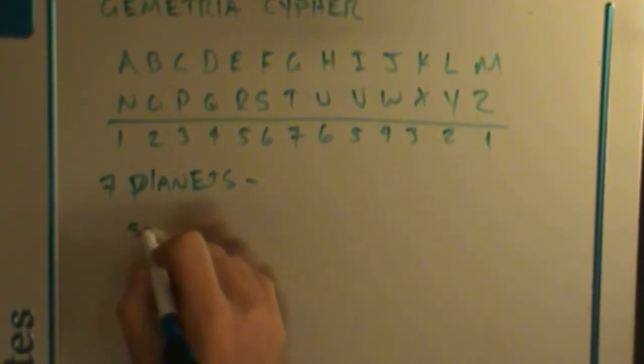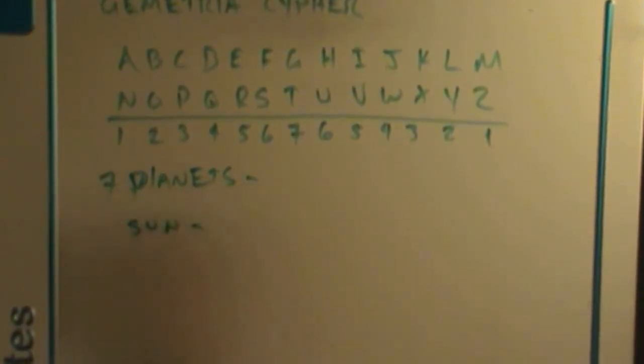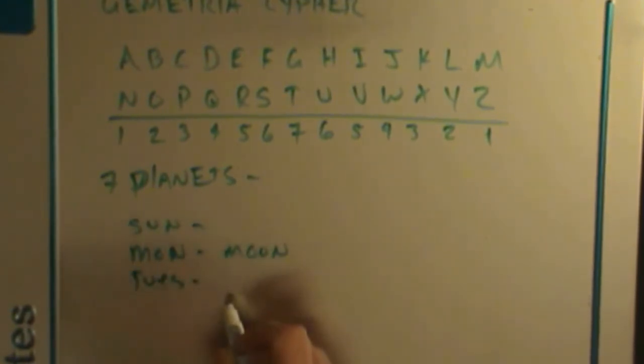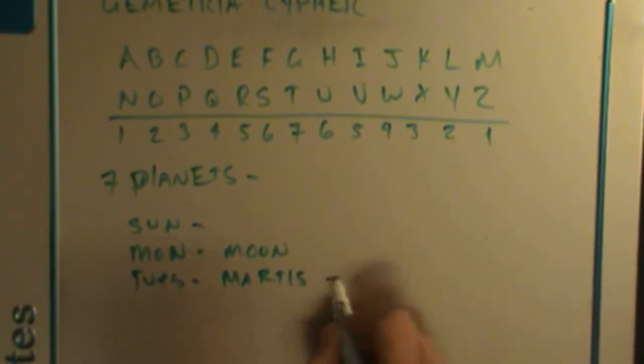So Sunday, well, that one's obvious. It's the day of the sun, the center of our solar system. Monday is in reference to the moon, and in Spanish or Latin it's called lunes, which means the moon. And then Tuesday in Latin is called martis, which is obvious that that's Mars.